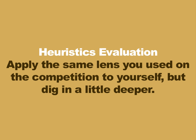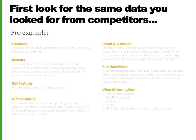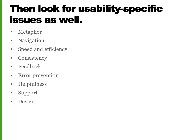Now let's discuss how we do this. Heuristic evaluations apply the same lens you used on the competition to yourself, but dig a little deeper. Because you're looking at one very important additional competitor — yourself. What that means is you'll be more of a stickler regarding usability best practices. You can think of this almost like a diagnostic. First, look for the same data you looked for from competitors, but for yourself — this helps answer the 'where do we sit' question. Then look for usability-specific issues as well — this helps answer 'where do we stack up.' These form a useful list which you can use for whatever site you happen to be looking at. Remember, we wouldn't necessarily be this completely thorough for the usability of every single competitor.